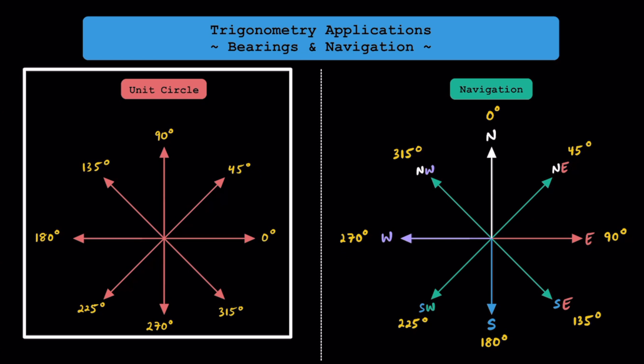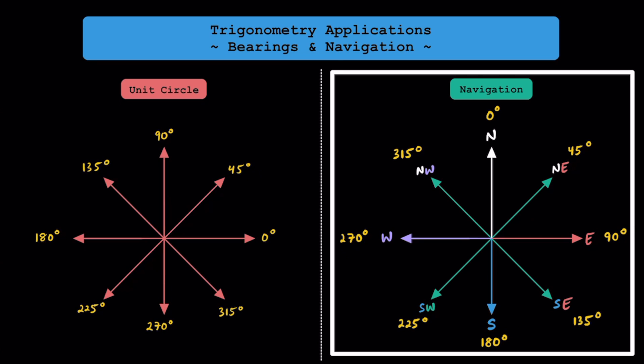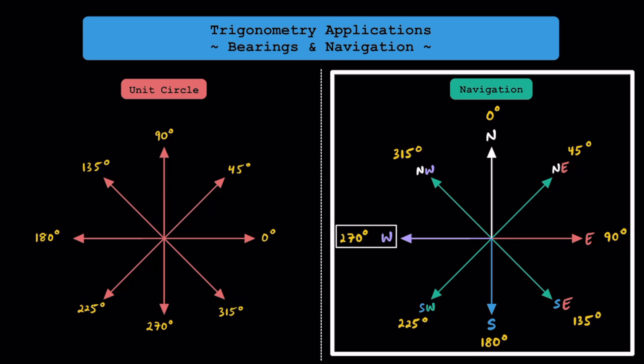Keep in mind that while 0 degrees is located on the x-axis for the unit circle, 0 degrees is actually located on the y-axis for navigation. When dealing with navigation, 0 degrees is pointing to the north, 90 degrees is pointing to the east, 180 degrees is pointing to the south, and 270 degrees is to the west.